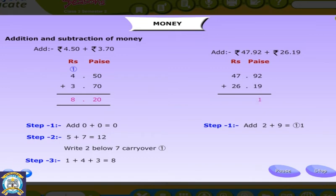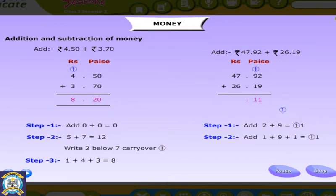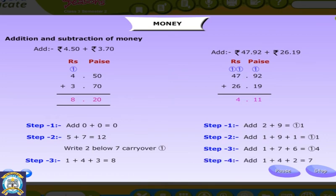Step 1: Add 2 plus 9 equal to 11, carry over 1. Step 2: Add 1 plus 9 plus 1, that's equal to 11, carry over 1. Step 3: Add 1 plus 7 plus 6, that's equal to 14, carry over 1. Step 4: Add 1 plus 4 plus 2, that's equal to 7.